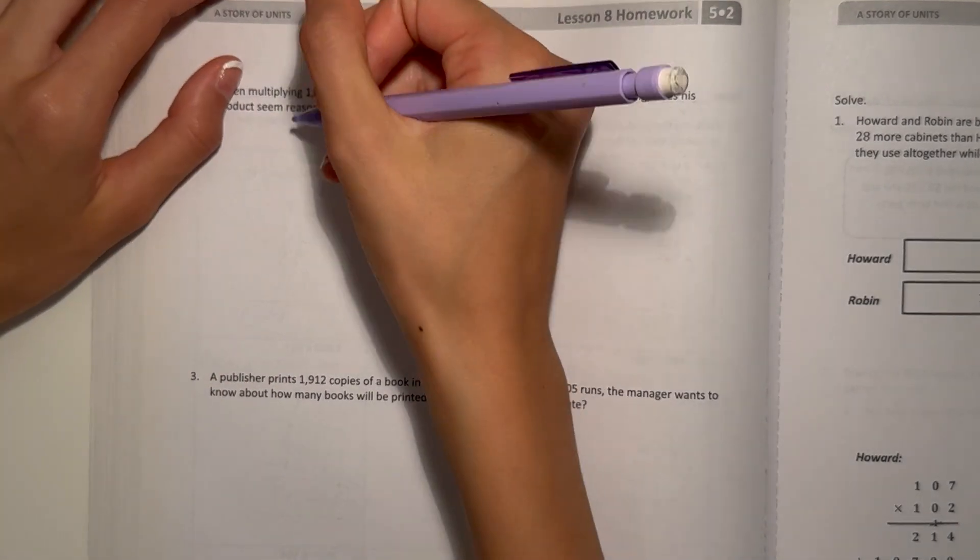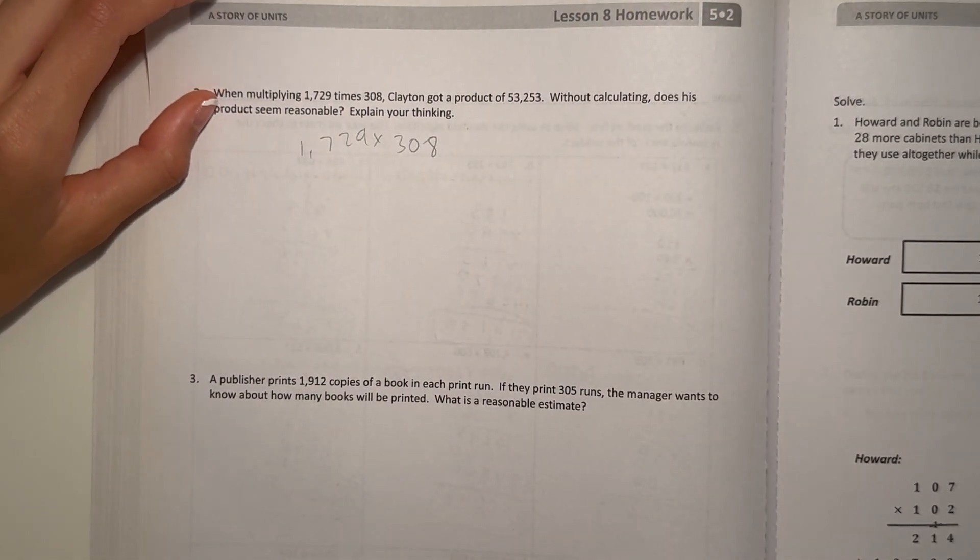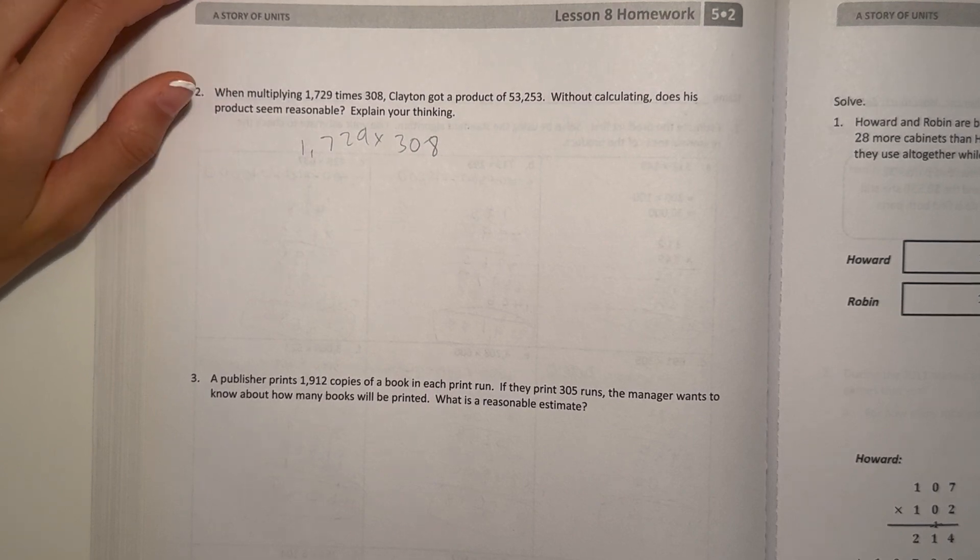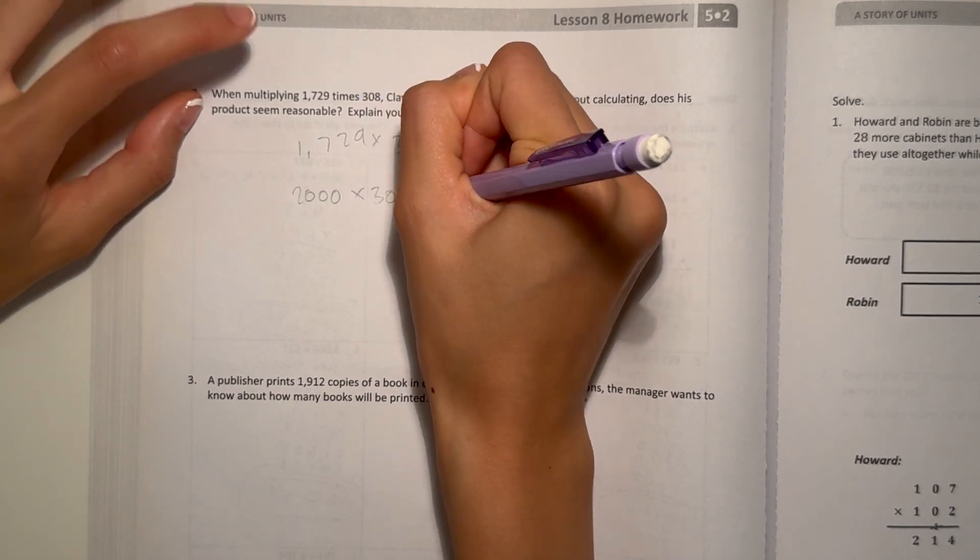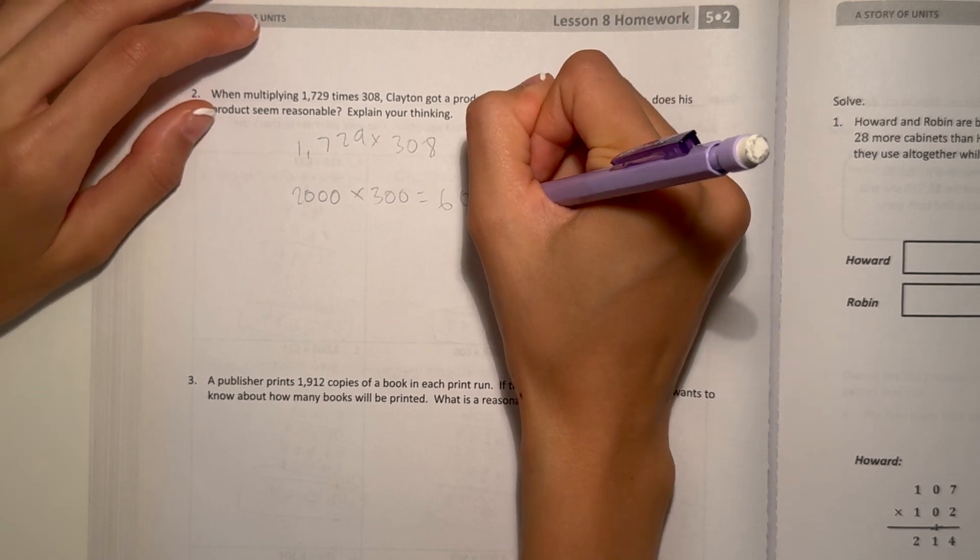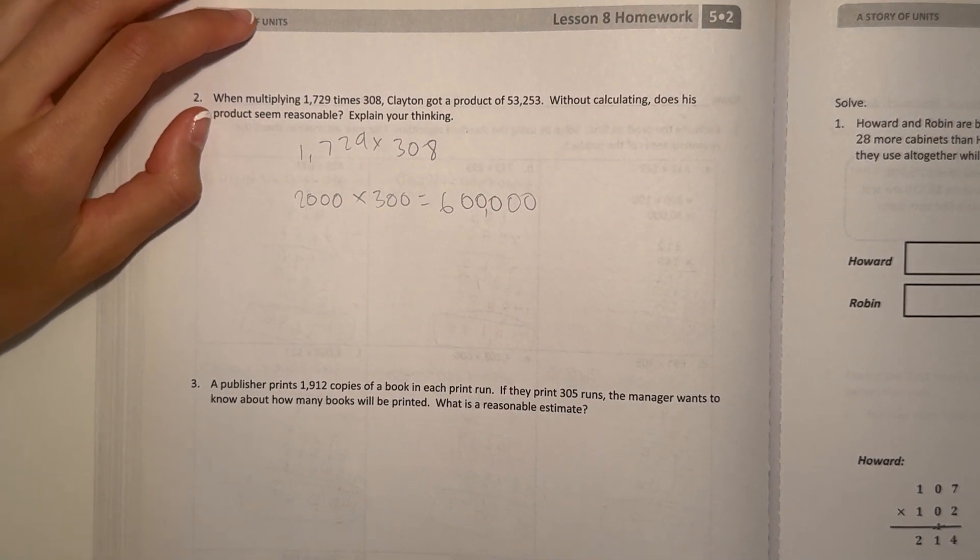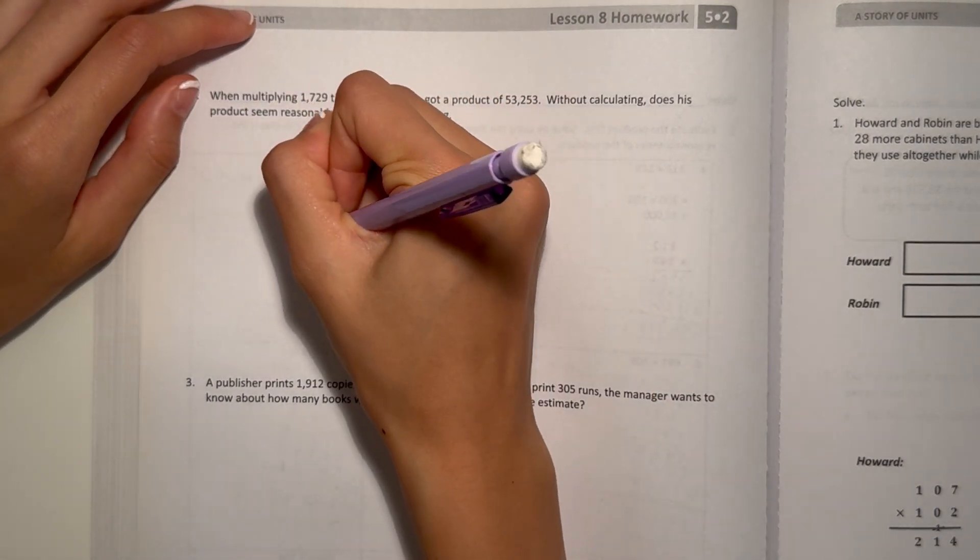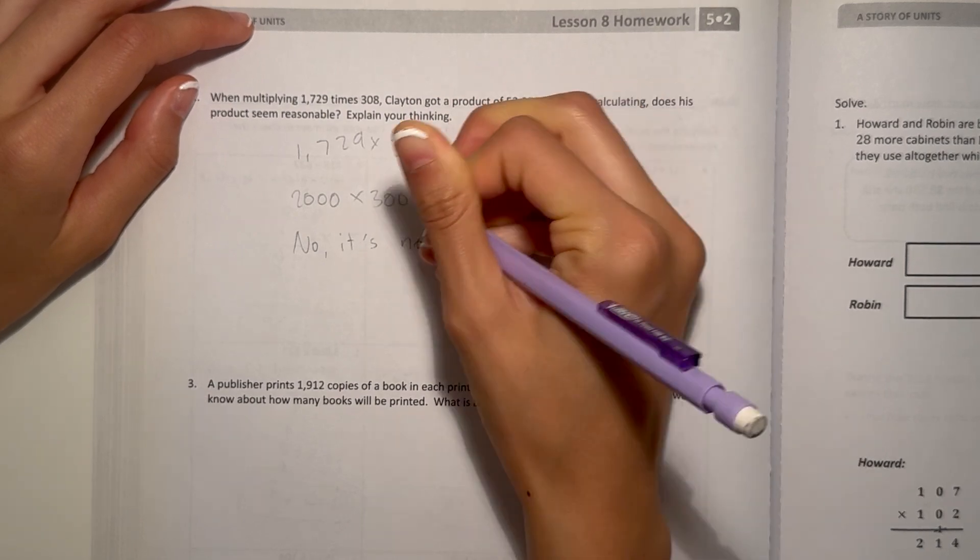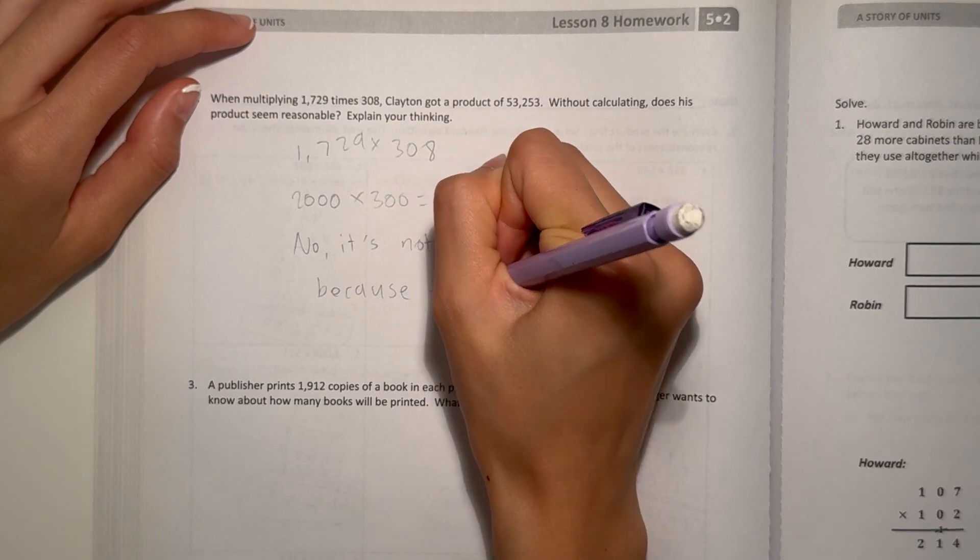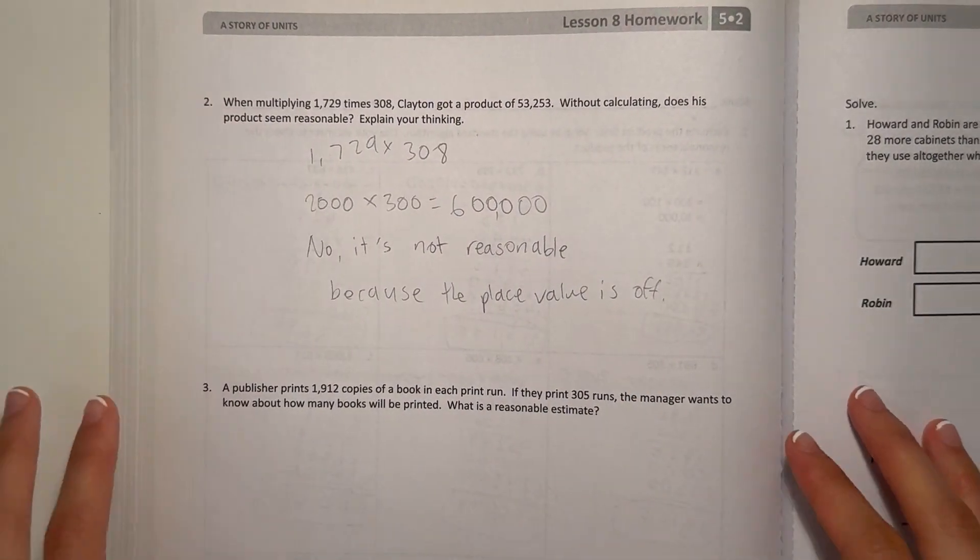Next page. Number two. By multiplying 1,729 times 308, Clayton got a product of 53,253. Without calculating, does this product seem reasonable? Explain your thinking. So let's round. This would go to 2,000 times 300, which is 6. And add the zeros. 600,000. Now, Clayton got 53,253. So that product is not at all reasonable, since it's literally a completely different place value, and it's way off. So it's not reasonable because the place value is really off.